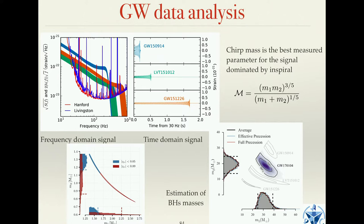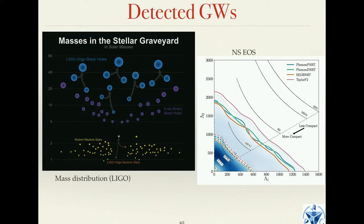Knowledge of your source and gravitational wave signal helps you predict what to expect in parameter estimation. A little about neutron stars: these are the black holes detected. For neutron stars, they have finite size and they are deformable.